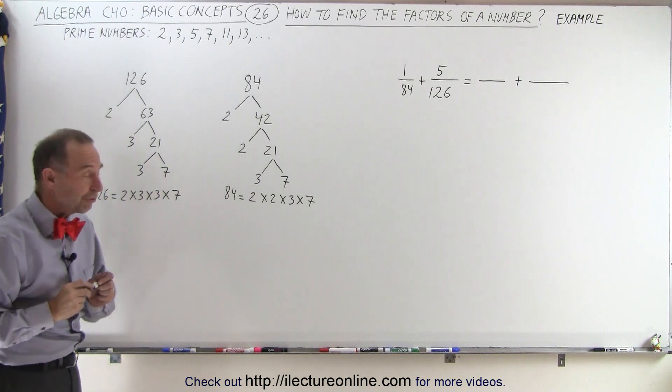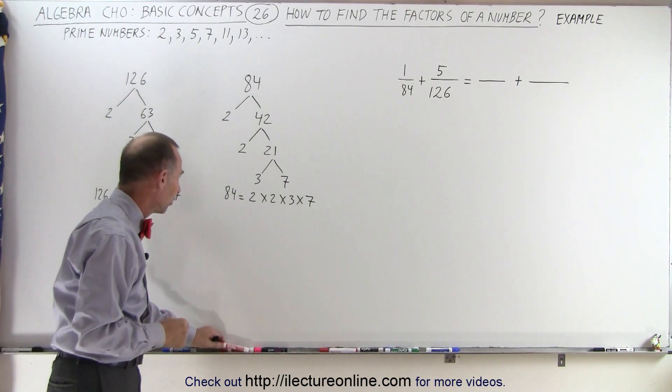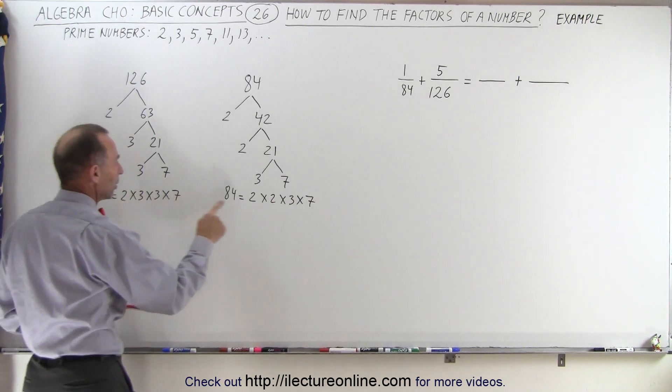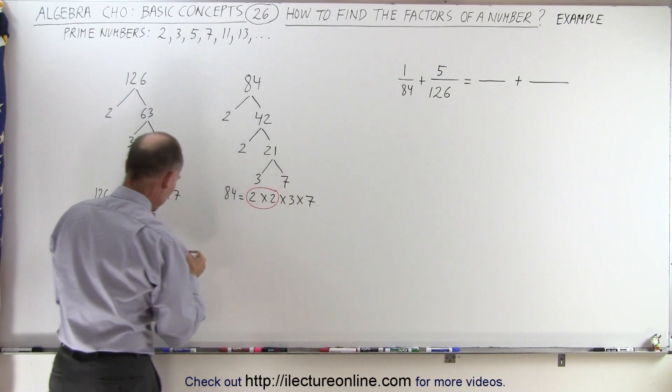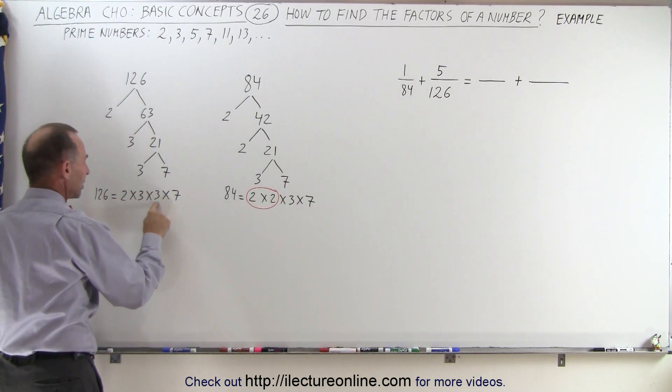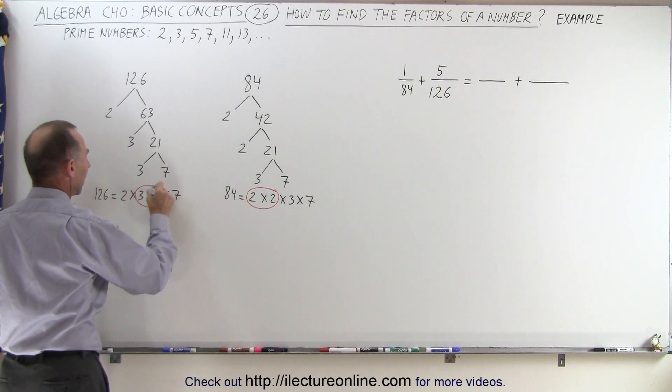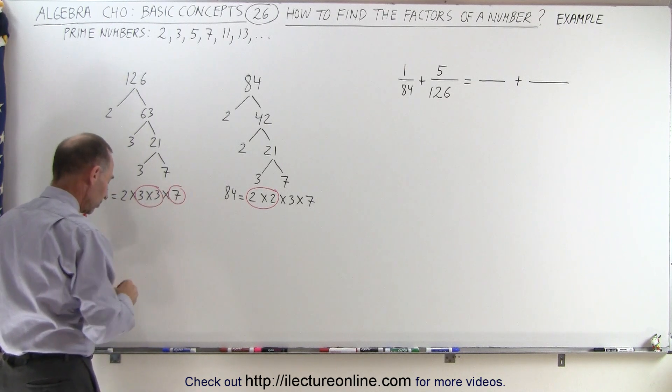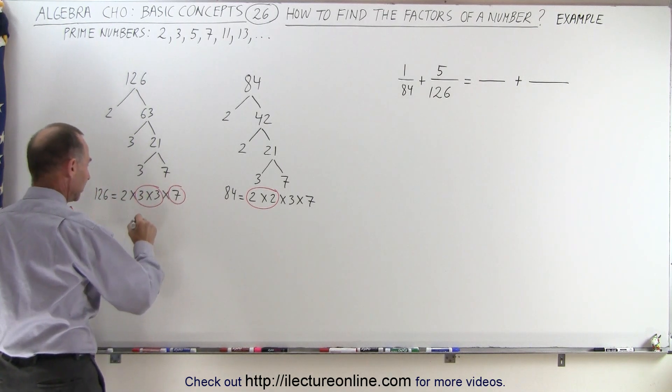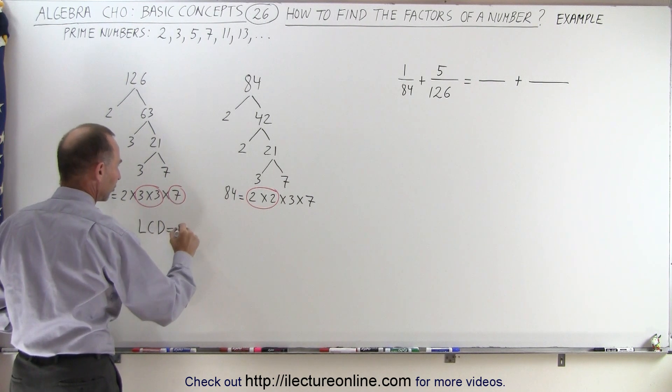Now look for each factor and see how many times it appears in each number. Factor 2 appears once here and twice there, so we need these two. Factor 3 appears twice here and once there, so take these two. Factor 7 appears once in each, so only need to account for it once. The lowest common denominator equals the product of all the circled factors.